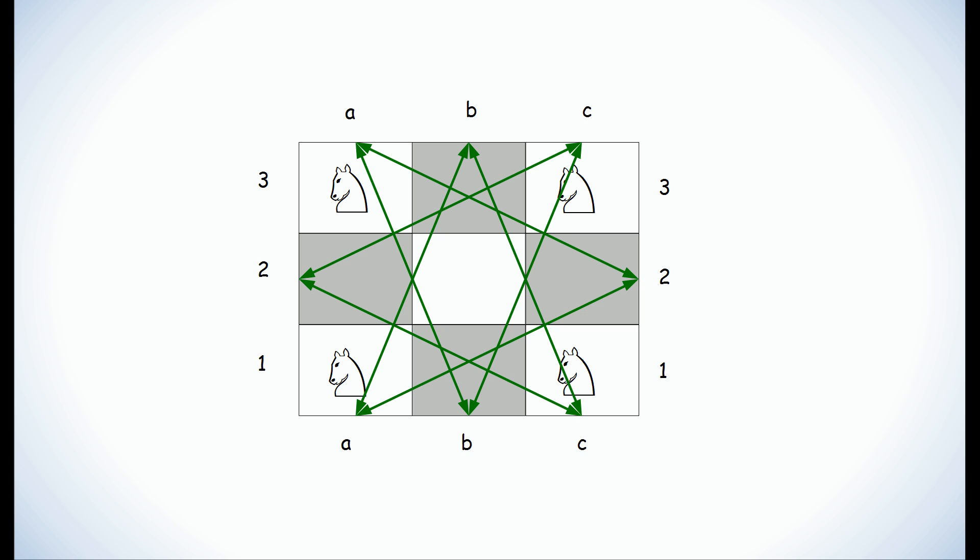Once we get to this final move right here, we've actually completed a circuit and we can't create any more unique arrows. Everything has already been done before.